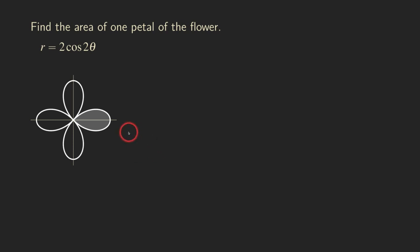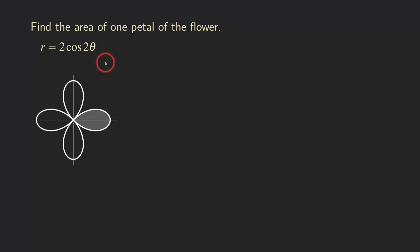Hello, everyone. We have a four-leaf flower right here. As you can see, there are four leaves. That's given by this polar equation r equals 2 cosine 2 theta. Our goal here this time is to find the area of just one petal of this flower, which is just one leaf right here.